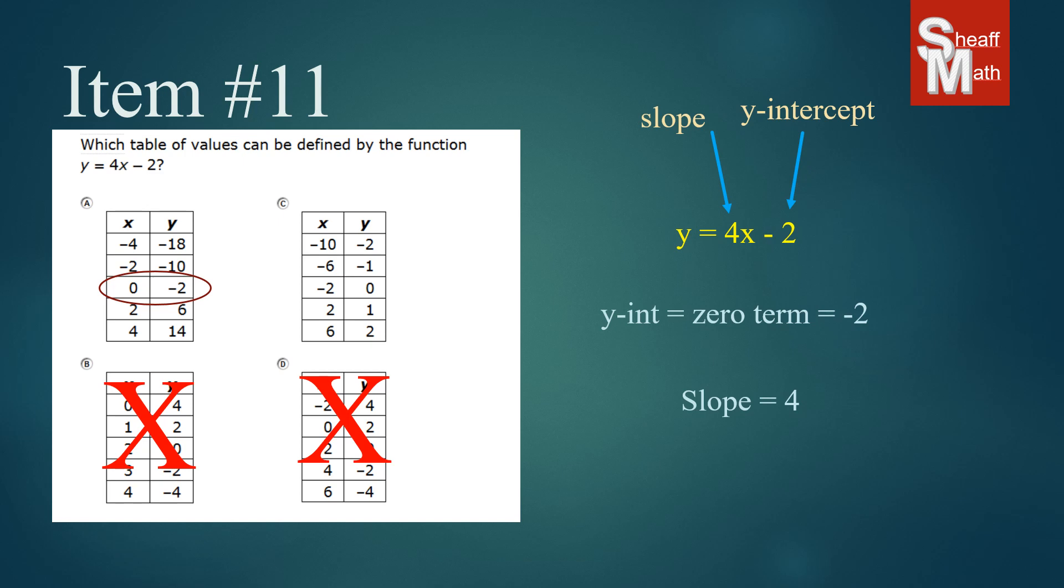And so if I take two of the points here and find the rise over the run, meaning 6 up to 14 goes up 8, and then on the x is 2 to 4 goes up 2, goes over 2, I've got a slope of plus 8 over 2. And that simplifies to 4 over 1, which is 4.